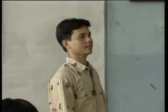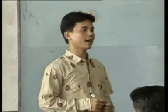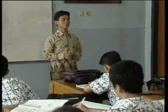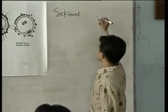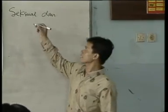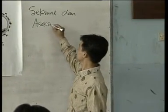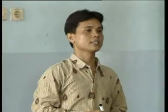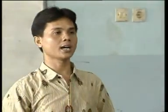Baiklah, saya akan menjelaskan apa itu reproduksi. Reproduksi adalah pembiakan sel untuk menghasilkan individu baru dari organisme sebelumnya. Ada dua cara reproduksi pada makhluk hidup: yang pertama adalah secara seksual, dan yang kedua secara aseksual. Reproduksi aseksual yaitu reproduksi yang tanpa didahului oleh pertemuan sperma dan ovum.